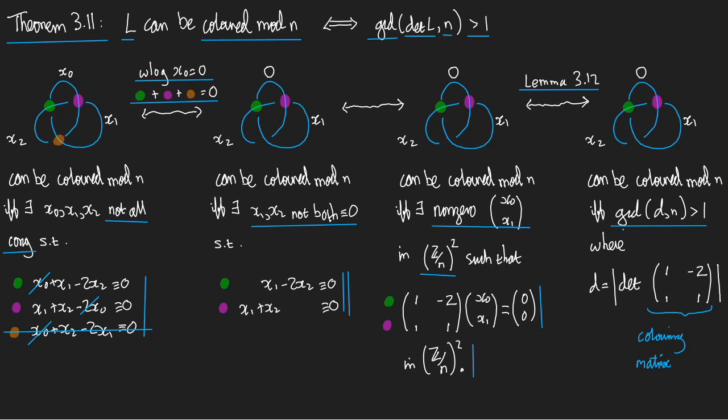Where d now, this d is the determinant of this matrix one minus two, one one that we had in the previous step there.